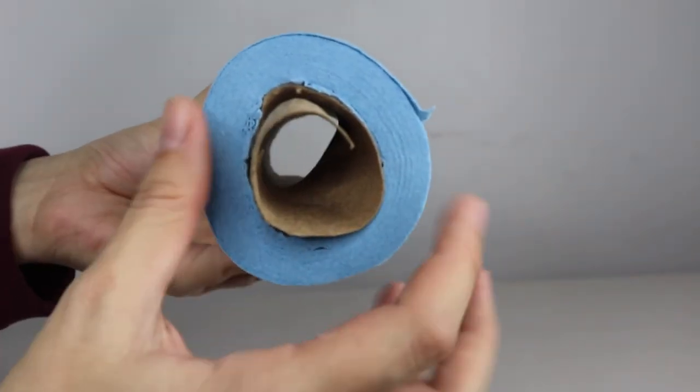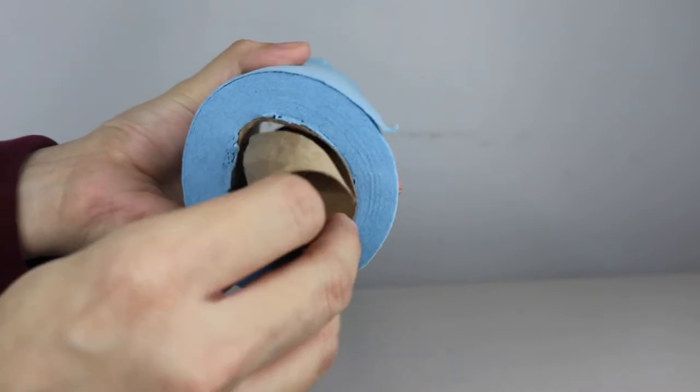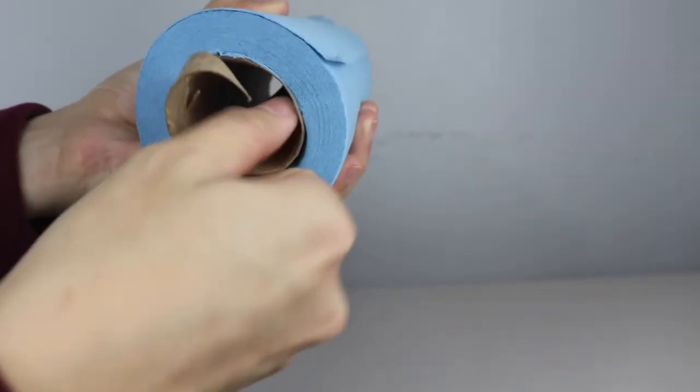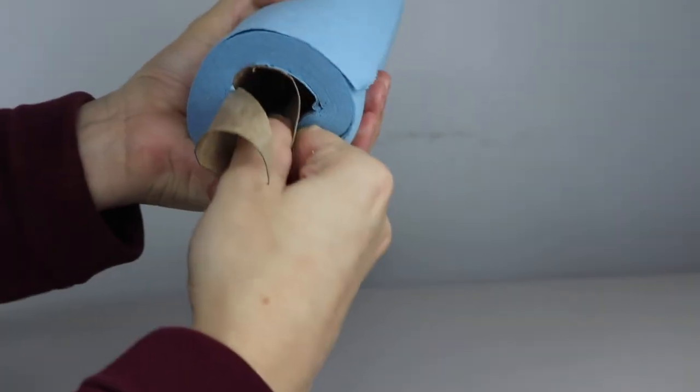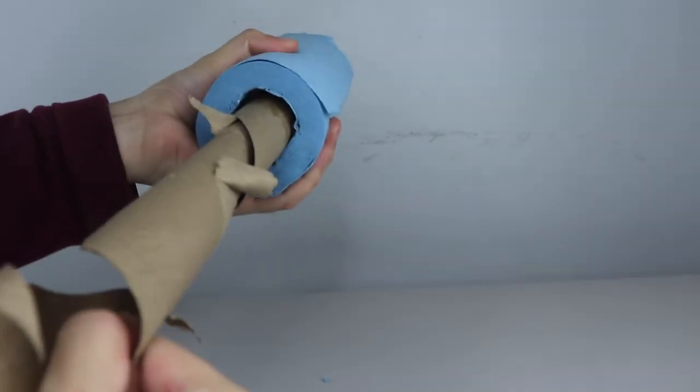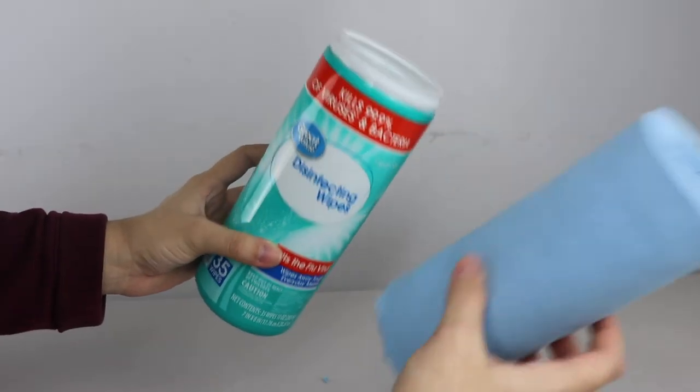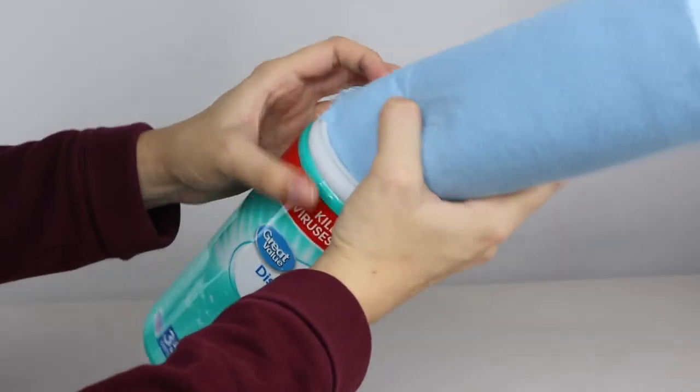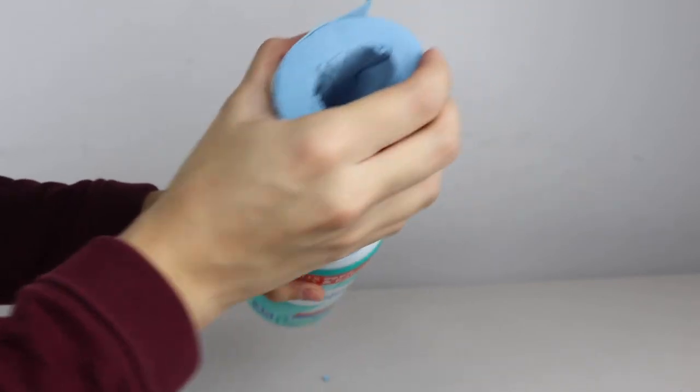So from here what we're going to do next is remove this inner cardboard portion. Take your container and your paper towels and it should fit right in.